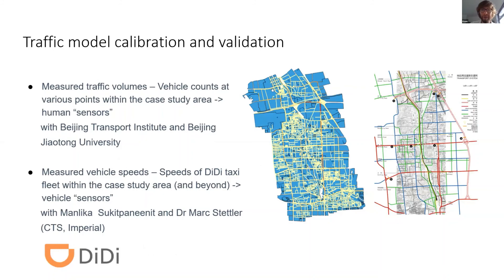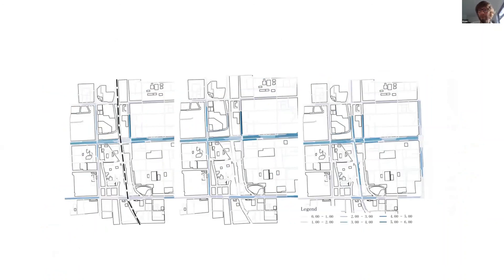We compared measured traffic volumes on streets with simulated data, and with the help of a colleague we compared local taxi data from the DiDi taxi fleet with the model to validate locations where we had speed and count data. We then tested different designs to see the impact on mobility and people's movement around the city, and from there looked at the impact on emissions and local air quality.